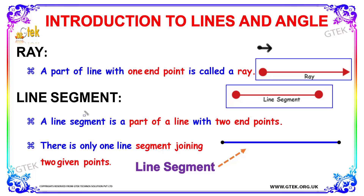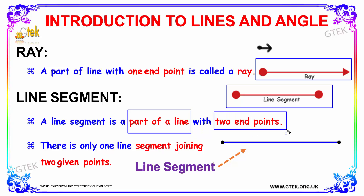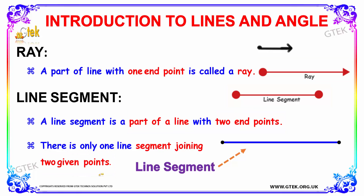A Line Segment is a part of a line with two end points. There is only one line segment joining two given points. So this is a point and this is a point — and this is a line segment.